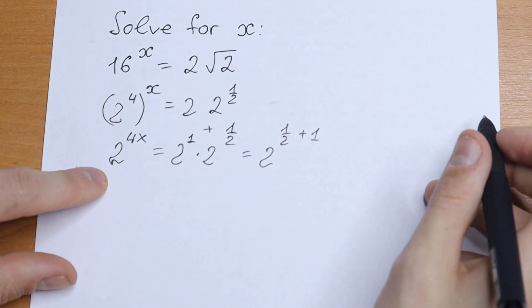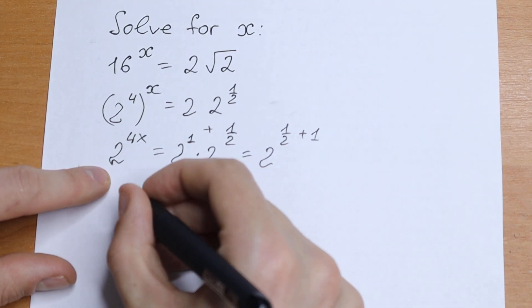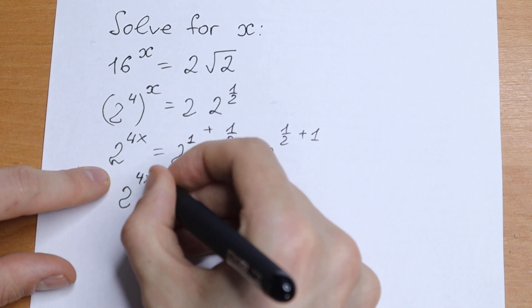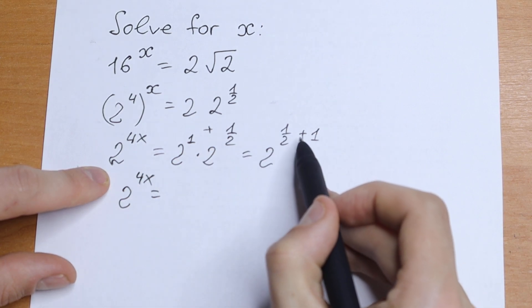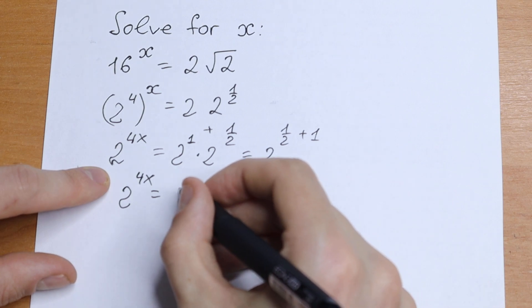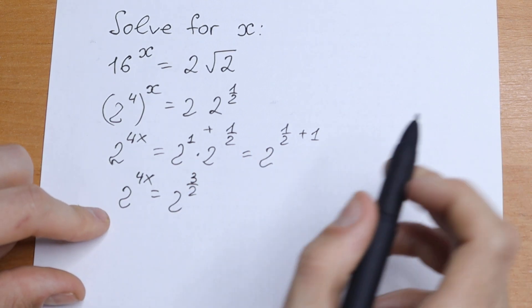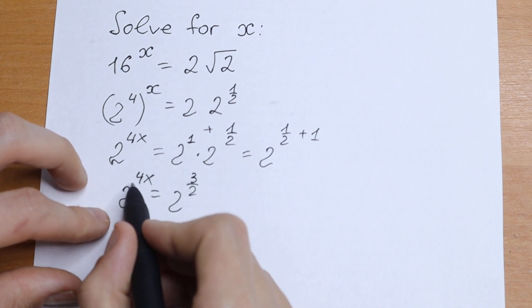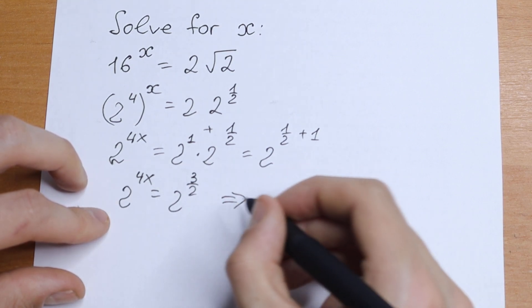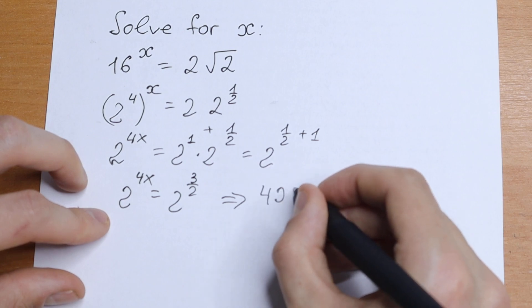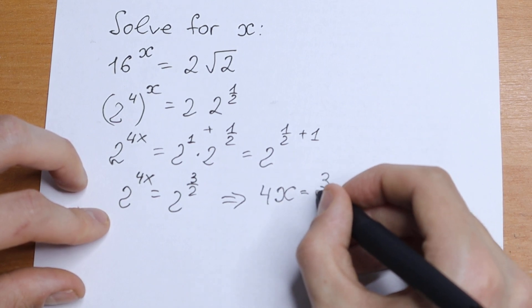As a result we will have the final equation. We will have 2 to the power 4x equal to 2 to the power 3 half. And take a look. Really good interesting case because we have same basis. And we need to write an equation with our powers. So as a result we will have 4x equal to 3 half.